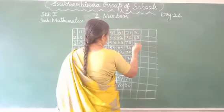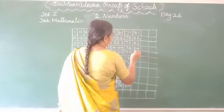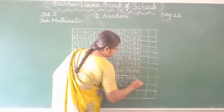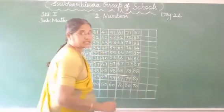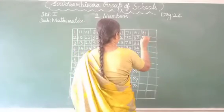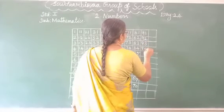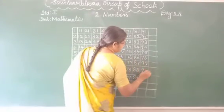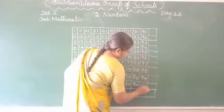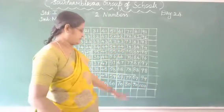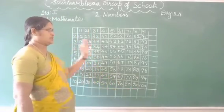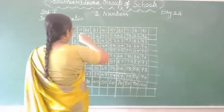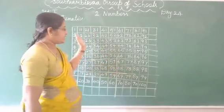Next. 81, 82, 83, 84, 85, 86, 87, 88, 89, 90. 91, 92, 93, 94, 95, 96, 97, 98, 99, 100. Okay. Write the numbers 1 to 100 neat and correctly.